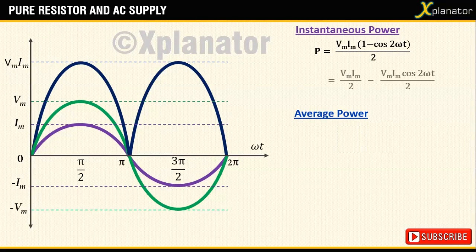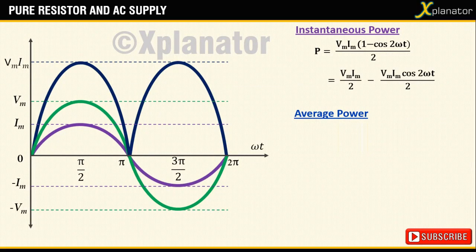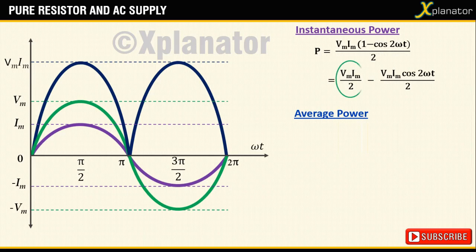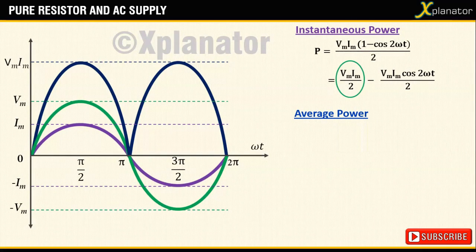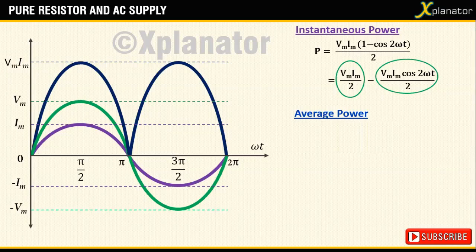Upon expanding that equation we'll get two terms. The first term, that is vm im by 2, is constant, and the second term is variable as it contains omega t.